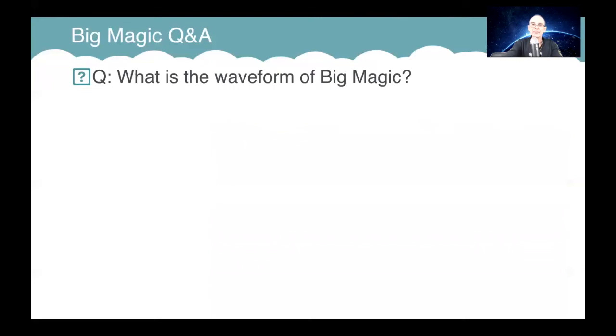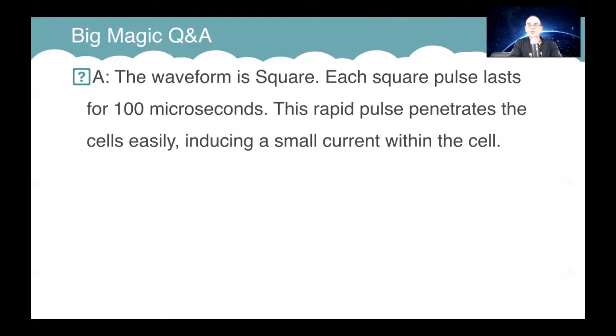What is the waveform? The waveform is square, nothing special, but it's extremely sharp. Each pulse lasts for 100 microseconds—that's 100 millionths of a second.